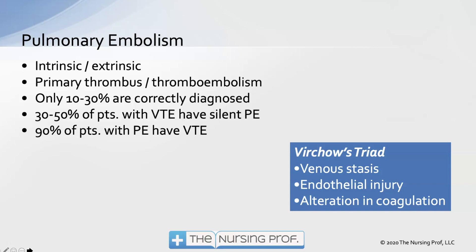Alteration in coagulation is the third risk factor — any situation that alters a patient's ability to have normal coagulation. Situations we encounter frequently include surgery, trauma, and sepsis. In those situations there is an increase in coagulation as the body tries to clot off invaders (in the case of sepsis) or clot off the area of injury (in the case of trauma and surgery).